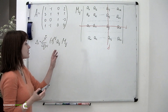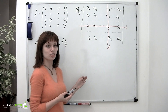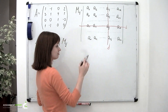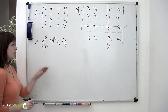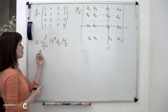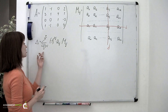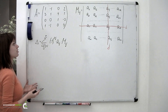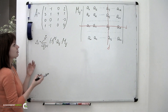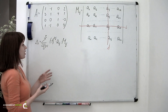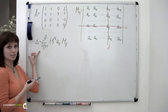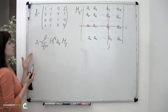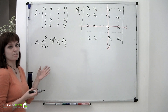Recall that a minor is a determinant of a matrix which is formed from the initial matrix by crossing out the i-th row and j-th column. This formula means that we set one of the two indices to a constant and let the other index change from 1 to n — essentially we are picking a row or a column and using its entries to find the determinant.